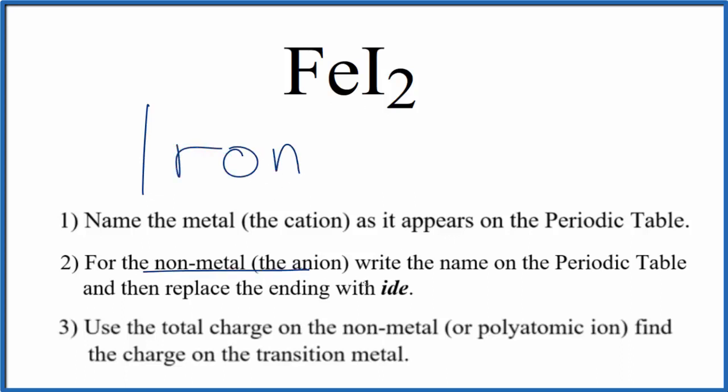Next, we're going to write the name for the non-metal, also as it appears on the periodic table. So I, that's iodine, lowercase i, and then we're going to cross out the ending, this I-N-E, and change it to I-D-E.